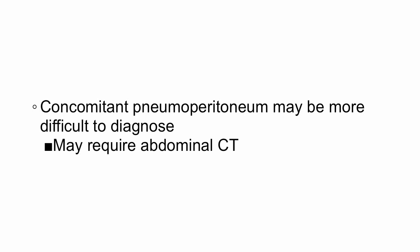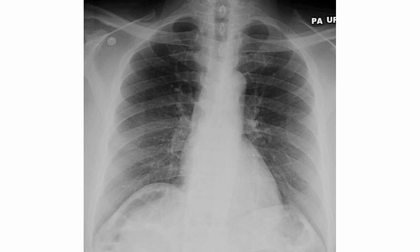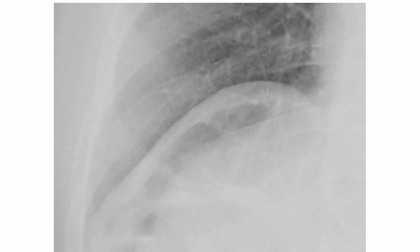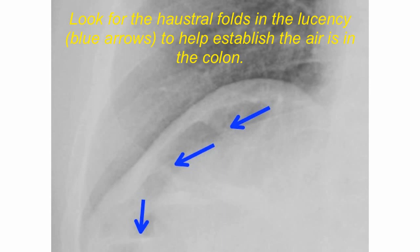Here's the x-ray of a patient with this syndrome. Go ahead and take a minute to pause it and look over it. The main finding is in the right upper quadrant of the patient's abdomen, but you can also see on the left lower abdomen too. There is interposition of the colon between the right hemidiaphragm and the liver, producing this crescentic lucency in the right upper quadrant as the big white arrow shows. That can be mistaken for free air. Here's a zoomed-in picture of the same area — now you can see the haustral folds inside this lucency, shown by the blue arrows, to help establish that the air is indeed inside the colon.